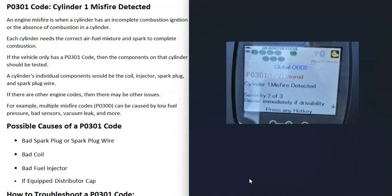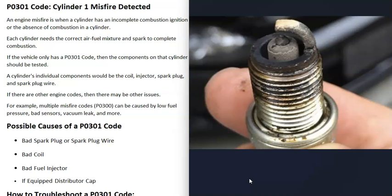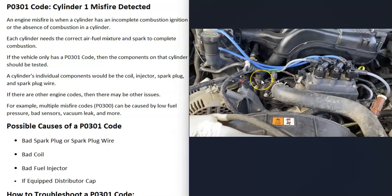What are some possible causes of a P0301 code? It could be a bad spark plug, especially if that vehicle has a lot of miles on it. The spark plugs might just need to be changed. It can also be the spark plug wire going to the spark plug. It might have a bad connection or there might be some kind of issue going on with it.